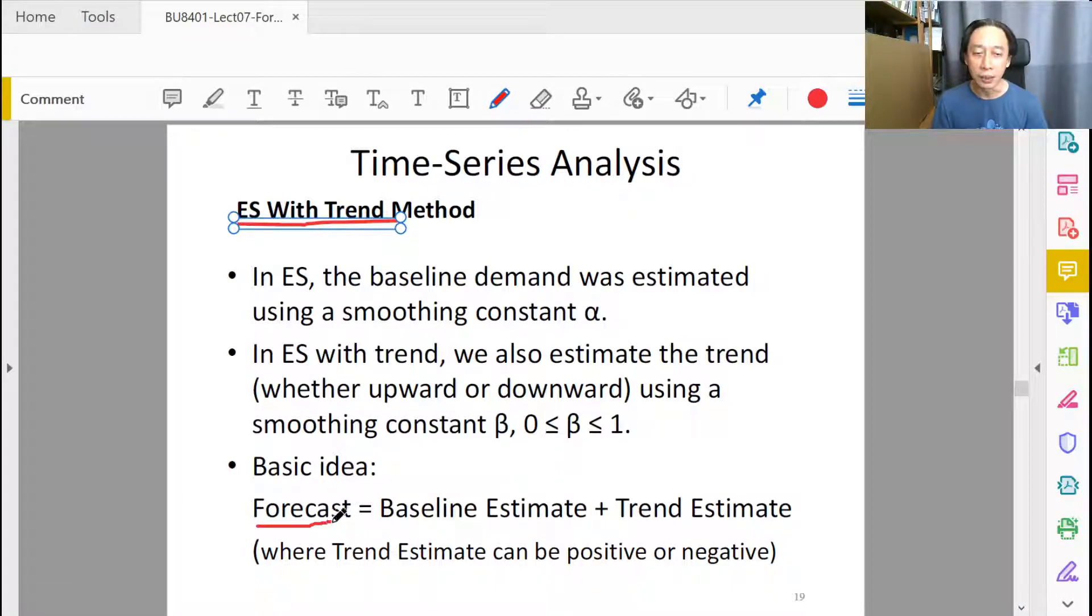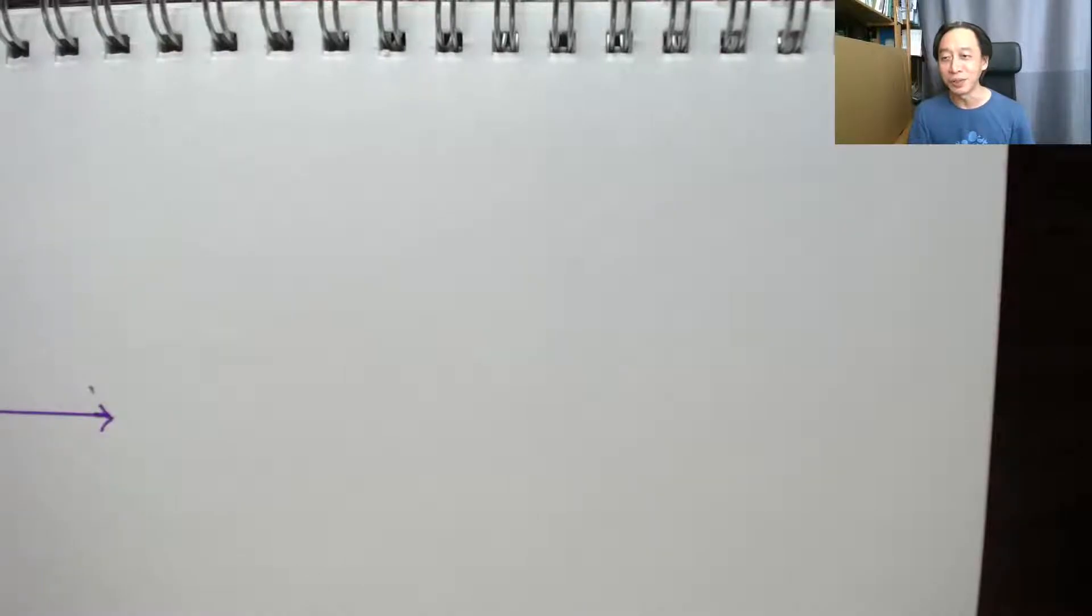The idea is that the new forecast value will be made up of two components: the baseline estimate and the trend estimate. Now to understand the rationale behind this, I'm going to try to draw an analogy about why we might want to believe this method. I'm trying to avoid using the word why this method is more accurate. I'm just trying to say that this method seems to suggest a way of handling the data in a way that gives us some feel that it is reliable.